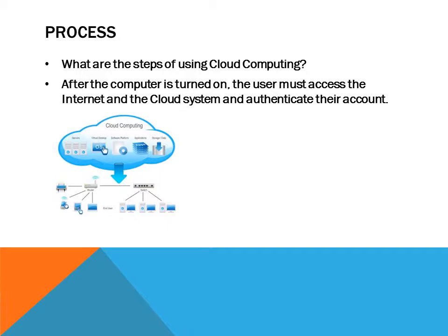Since cloud computing takes place on the internet, the way to access and save information is a little bit different than saving to your computer or hard drive. To access cloud computing, the computer first must be turned on and must have its own operating software. Then the internet must be accessed and you must log into your cloud system by authenticating your own account. Everyone has an individual cloud account, and they have to authenticate themselves to access it, open documents, edit them, and share them with others.